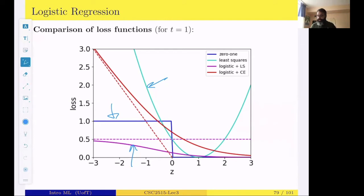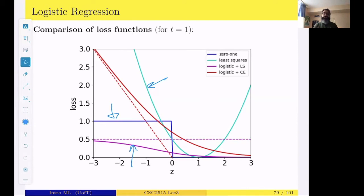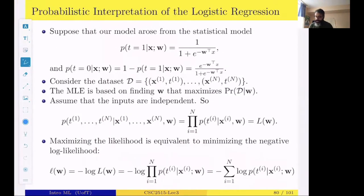Last time, for the regression part, we started from squared error and said it's a reasonable and intuitive loss. We also provided a probabilistic interpretation: if the noise model is Gaussian, then doing maximum likelihood estimation leads to the same squared error loss function. Here we can do the same thing for logistic regression, but with a different probabilistic model.